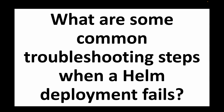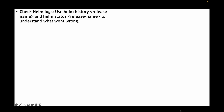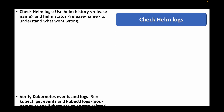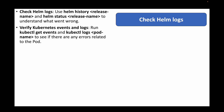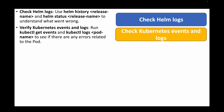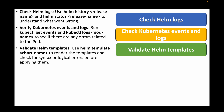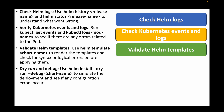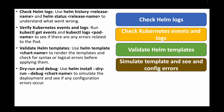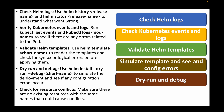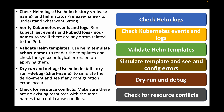The last question is: what are some common troubleshooting steps when a Helm deployment fails? First, check Helm logs using helm history and helm status to understand what went wrong. Second, verify Kubernetes events and logs using kubectl get events and kubectl logs to see if there are pod-level errors. Third, validate Helm templates using helm template [chart-name] to render templates and check for syntax or logical errors. Fourth, do a dry run using helm install --dry-run --debug to simulate the deployment and check for config errors. Finally, check for resource conflicts — ensure no existing resources with the same names are causing conflicts.